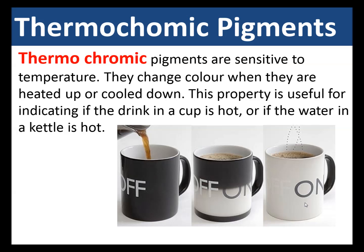Thermochromic pigments are sensitive to temperature — they change colour when heated up or cooled down. This property is useful for indicating if a drink in a cup is hot or if the water in a kettle is hot. They are also used for children's feeding spoons so that if the food is too hot it will indicate it.